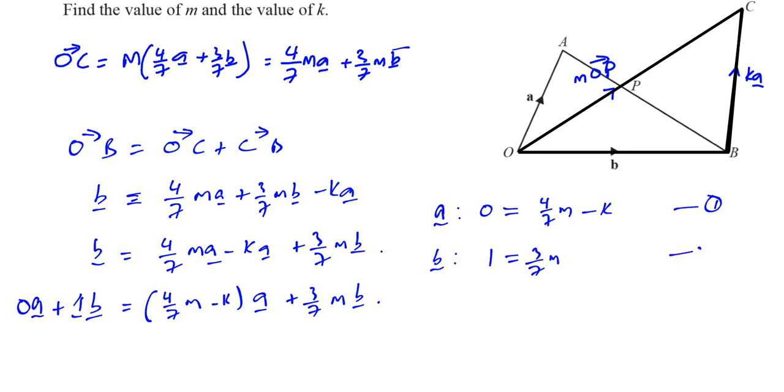Now, the second equation I can solve by itself. I can just multiply both sides by 7 over 3. I want to multiply by 7, divide by 3. I'm left with 7 over 3 is equal to m. So I know what m is.